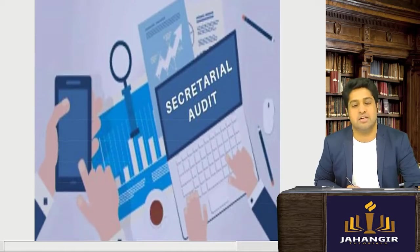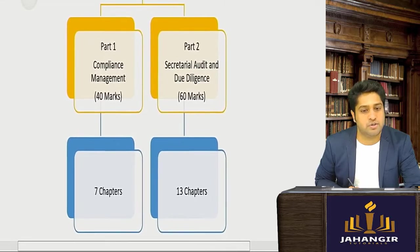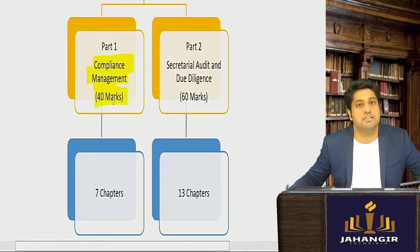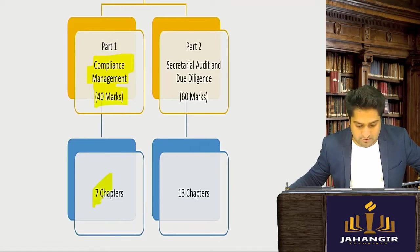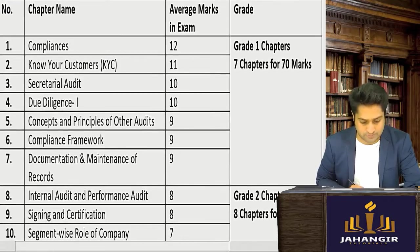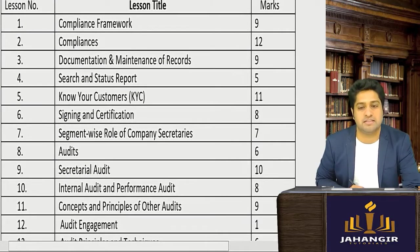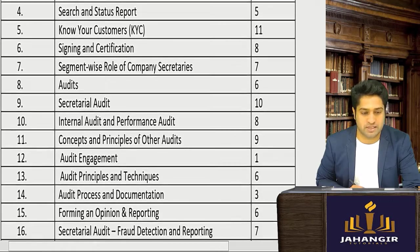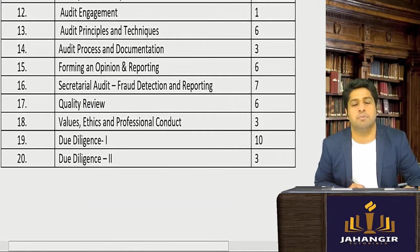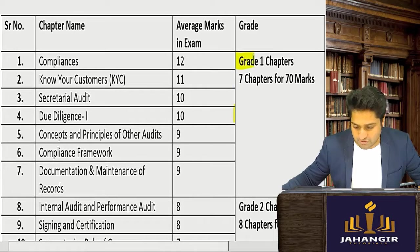The next subject is secretarial audit, done by company secretaries. The bifurcation has already been given: part one is compliance management, which is 40 marks covering 7 chapters, and secretarial audit and due diligence is 60 marks with 13 chapters to study. Let's check the chapter-wise weightage — you can take a screenshot and put it in your modules.